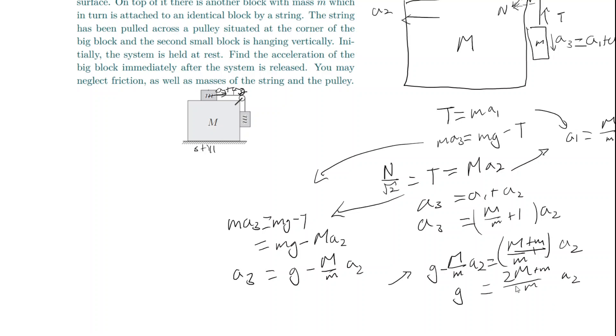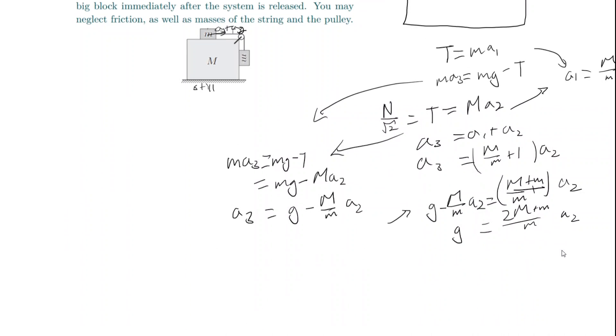And finally, that gives us a sub 2 equals mg over 2M plus little m. And that gives us our answer.